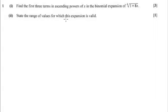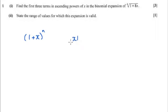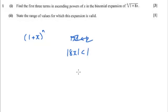Part 2 wants us to state the range of values for which the expansion is valid. A normal (1 + x)^n equation will be valid for the expansion between minus 1 and 1. So our 8x that we've got here needs to be between minus 1 and 1.